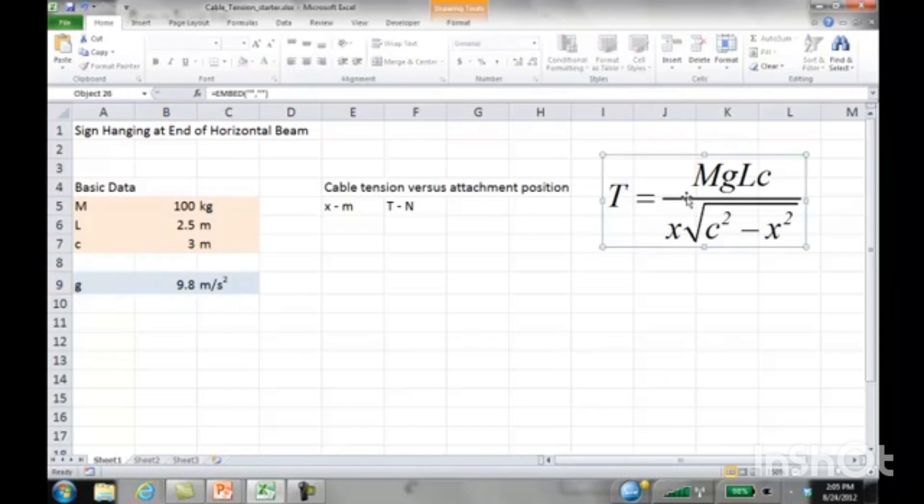I've copied the formula for tension here. It's a function of the mass of the sign, g is gravity, L is the length of the beam, C is the length of the cable. What we're going to vary, the independent variable, is the attachment position. The dependent variable then is T, the tension, the response as you change the attachment position.